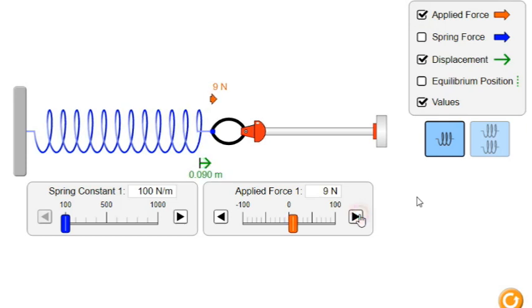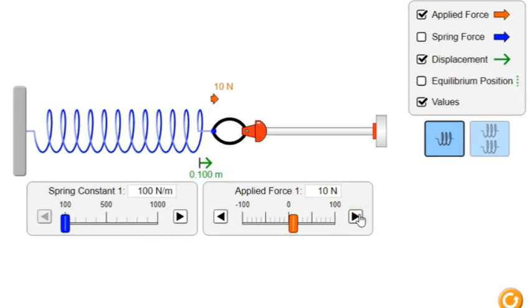Now, let's apply a force of 10 N to the spring. According to Hooke's Law, the displacement of the spring will be proportional to the applied force. So, the spring will extend by 0.1 meters or 10 centimeters.